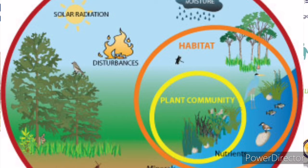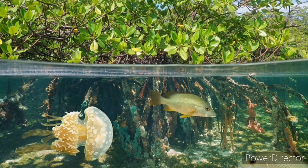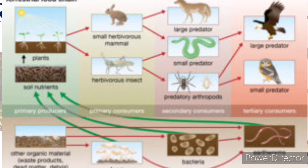According to the definition given by Britannica.com, an ecosystem is the complex of living organisms, their physical environment, and all their interrelationships in a particular unit of space.